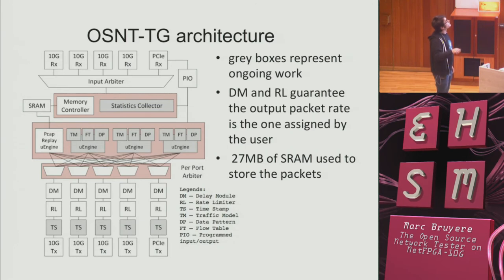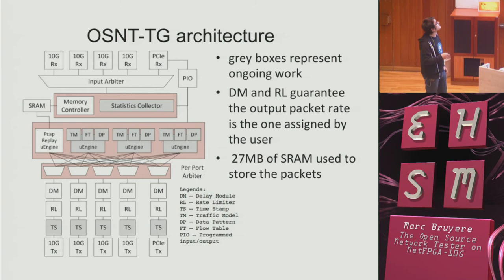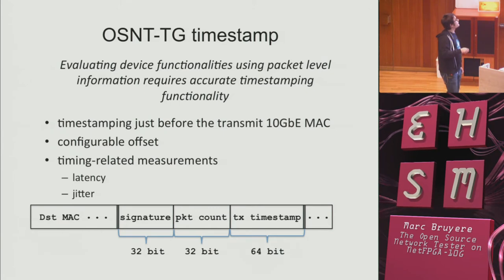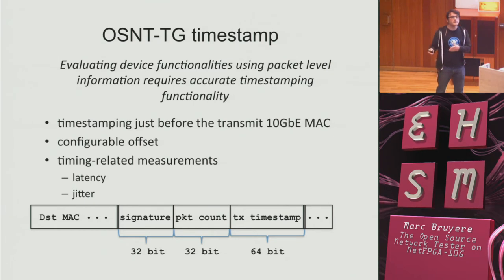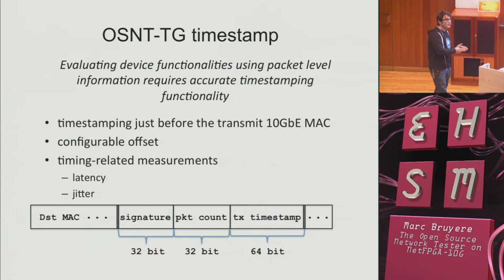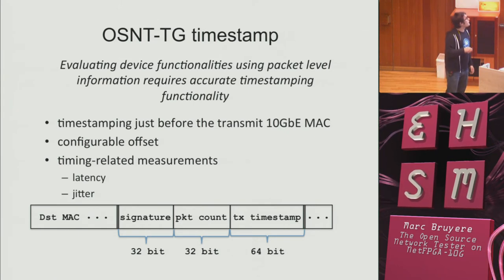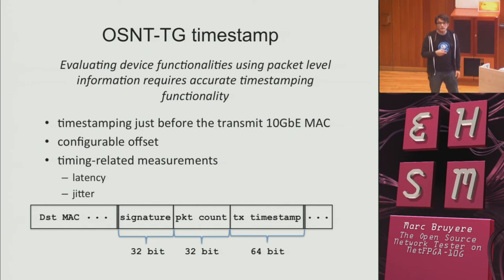Statistics collectors show how many packets have been sent and what type of packets. Timestamping on the output helps when you want to test latency along a data path. When you send a packet with a timestamp, you know when it was sent. Then you can capture the same packets and compare the two timestamps. To be sure you get the right packet among many packets going out at the same time, you can compare by signature.